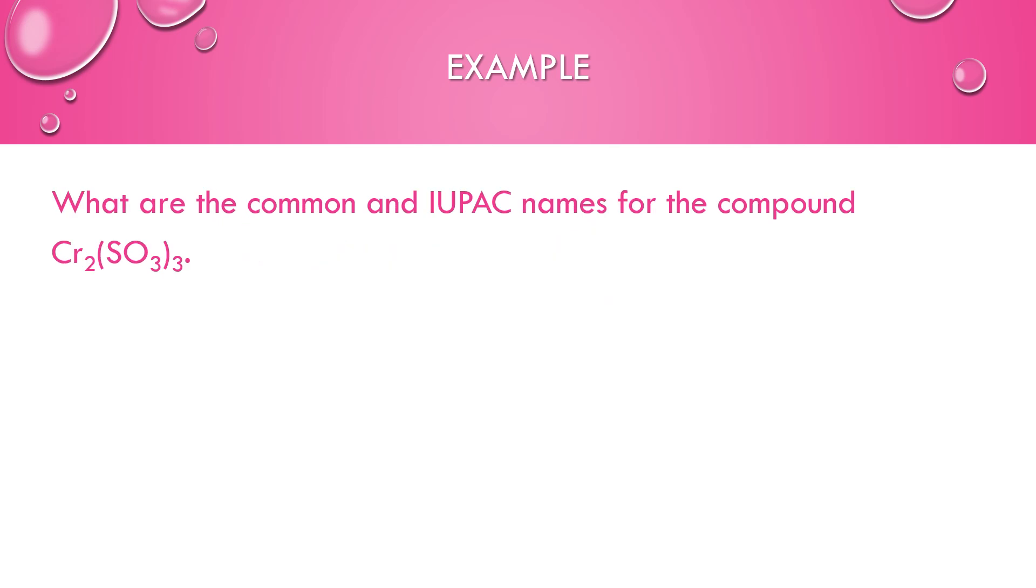What are the common and IUPAC names for the compound Cr2(SO3)3. Chromium is our transition metal, and sulfite is the common name for that polyatomic ion. Because sulfite has an overall charge of negative 2 and there's 3 of them, the chromiums have to add up to positive 6. So each one is plus 3. There's our common name, chromium 3 sulfite. You could also call it chromium 3 sulfate 4 because the sulfate ion has a sulfur which has an oxidation state of 4 instead. So we could say sulfate 4. Both of those work for naming.